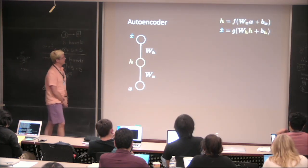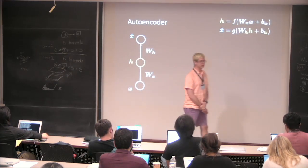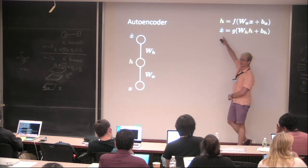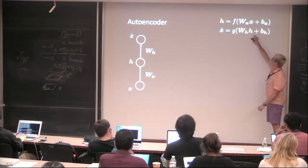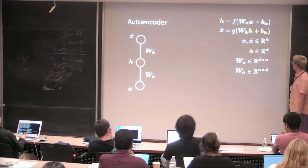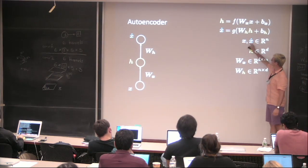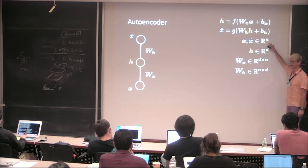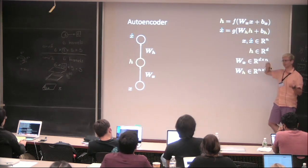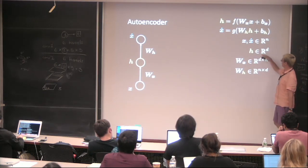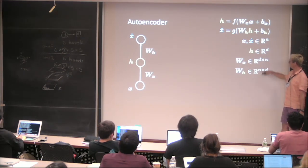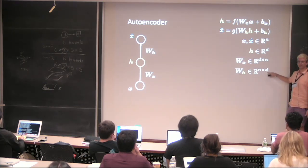The equations are all the same. The hidden representation is an affine transformation of the input to which we apply a nonlinearity. Then our estimation of the input is an affine transformation of the hidden representation to which we also apply a nonlinearity. The input and the reconstruction have the same dimensionality because it's the same thing. This is why it's called an autoencoder — we are encoding its own input. The hidden representation is R^d where d is the dimension of the hidden space. The encoder maps from N to D, and the decoder maps from D back to N.